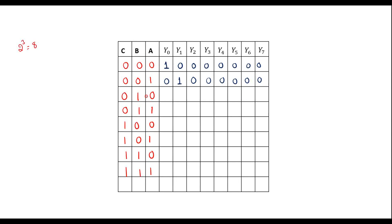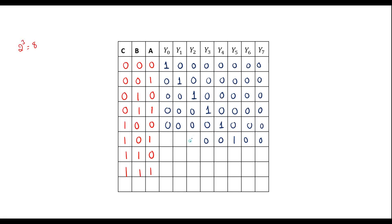When C,B,A is 0,1,0 — that is 2 — Y2 line is high and the rest are 0. When it is 0,1,1 — that is 3 — Y3 line is high, rest are 0. For 1,0,0, Y4 is high. For 1,0,1, Y5 is high. For 1,1,0, Y6 is high. And for 1,1,1, Y7 line is high, rest are 0. This is the truth table.